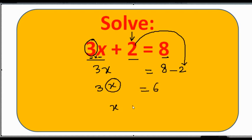So to find x, we have to send 3 to that side. The relation between x and 3 is multiplication. Multiplication goes to the other side and becomes division. So 6 divided by 3 is 2. 3 ones are 3, 2s are 6. The value of x is 2, students.